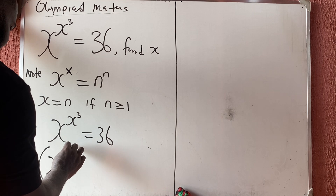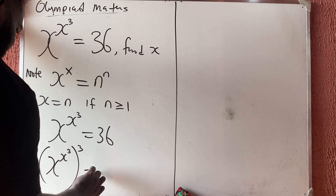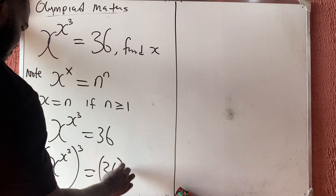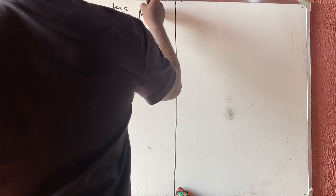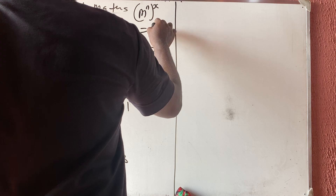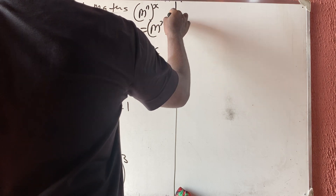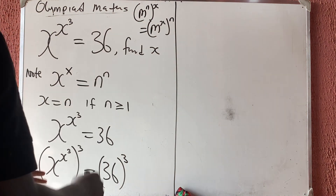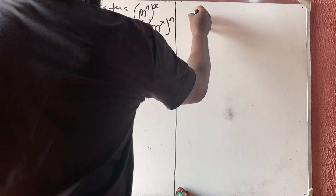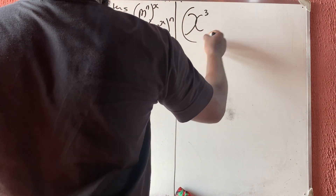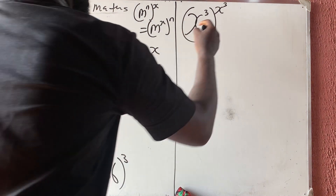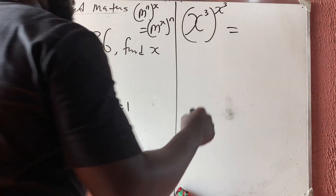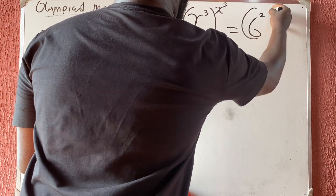Now you know that m raised to power n, all raised to power x, is the same as m raised to power x, all raised to power n — they can swap. Applying that swap, we get x raised to power 3, all raised to power x raised to power 3, equal to 36 raised to power 3. And 36 is 6 squared, so 36 raised to power 3 equals 6 raised to power 6.